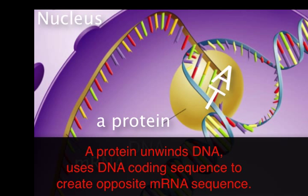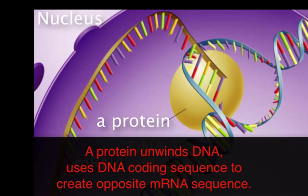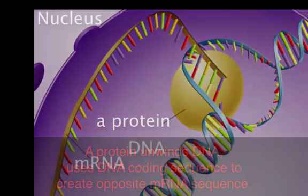If the next letter in DNA is G, then it's going to be a C in mRNA. This protein is unwinding the DNA, reading the coding strand, and creating the mRNA sequence based on the DNA coding strand. This is of course happening in the nucleus. Let's go on to step two.